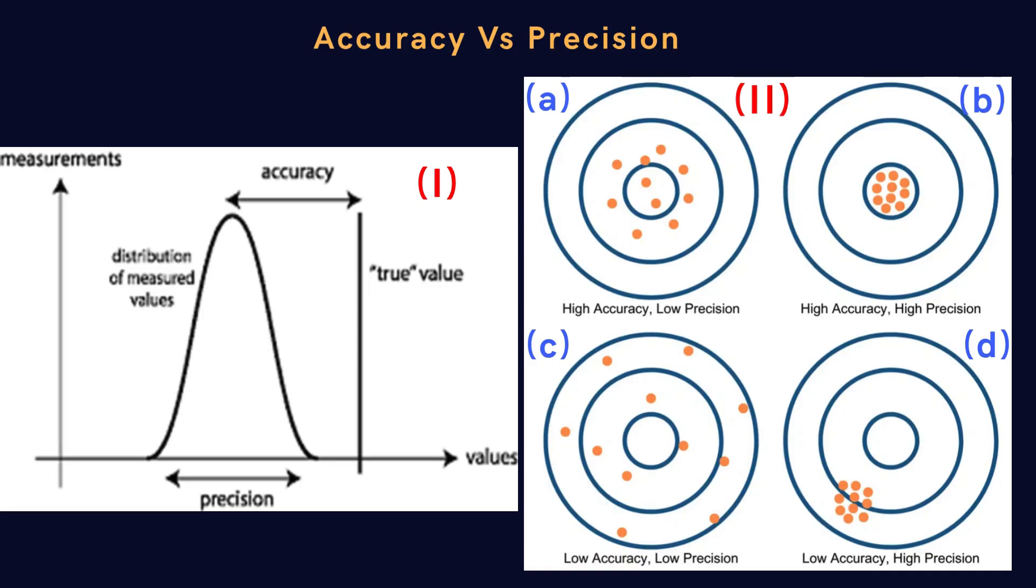Now, look at the four target diagrams. In A, the measurements are close to the center overall but spread out, this shows high accuracy and low precision. In B, all the points are tightly grouped near the center, this represents high accuracy and high precision, which is ideal. In C, the points are scattered and far from the center, this shows low accuracy and low precision. Finally, in D, the points are closely grouped but away from the center, meaning low accuracy but high precision. In summary, accuracy means closeness to the true value, while precision means consistency among measurements. For reliable analytical results, both accuracy and precision are essential.